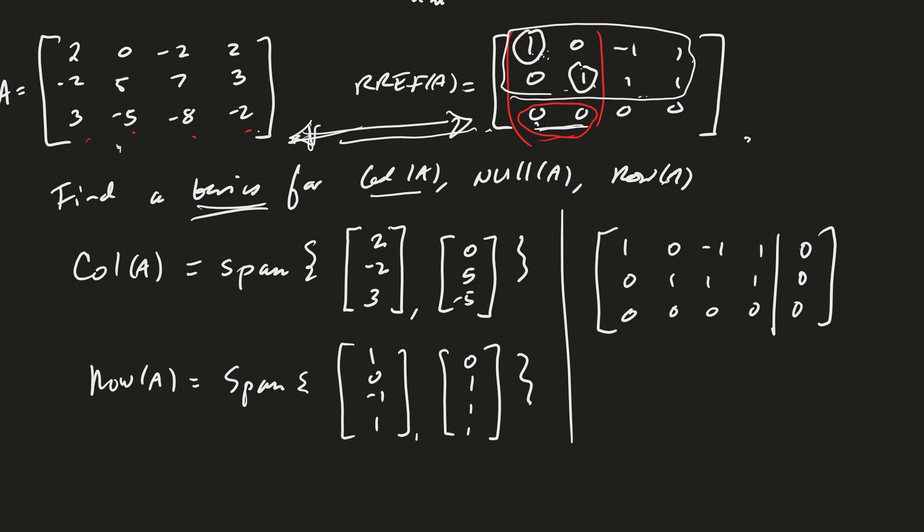So finally, we're looking for the basis for the null space of A. By the way, before we get started, what should the dimension of the null space of A be? Well, we're in R4 for the domain, right? Because X needs to be in R4 in order for A times X to be defined. So the domain here is in R4.